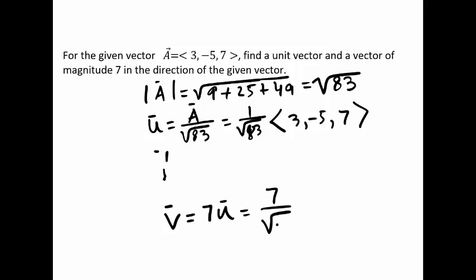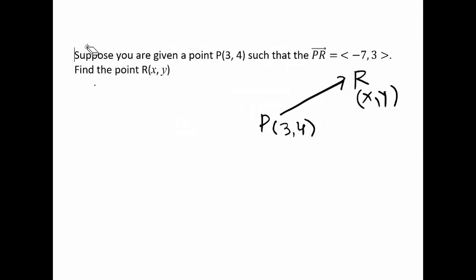So I'm done with the unit vector and a vector in the same direction but with different magnitude. Suppose you are given a point P with coordinate 3, 4...